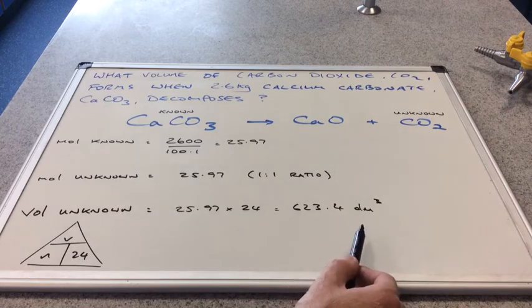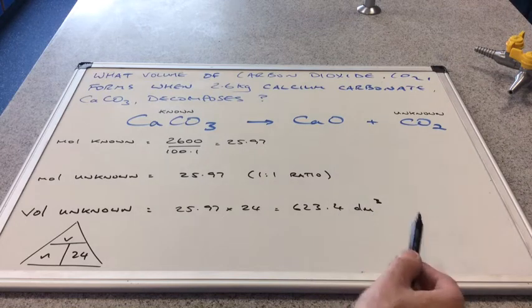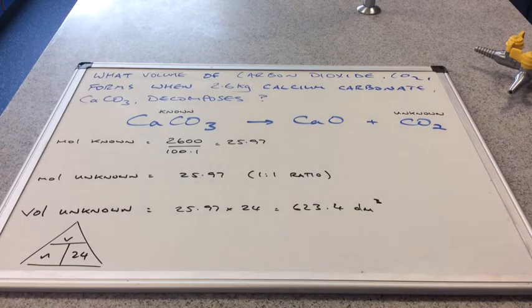If the examiner wants the answer in centimeters cubed, we would then multiply that again by 1000, or we could have just put 24,000 in at that stage. So just be aware of the units the examiner wants.